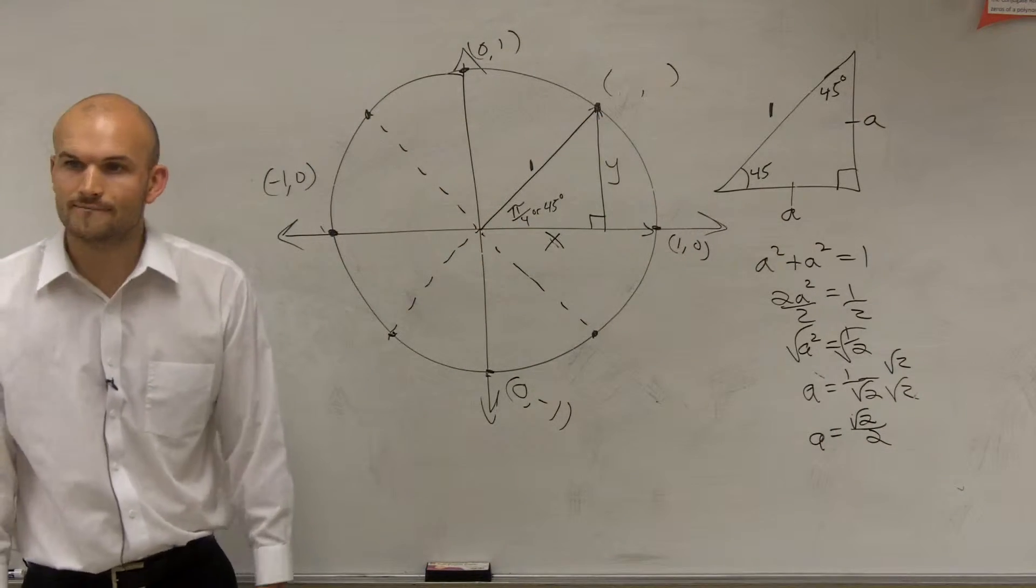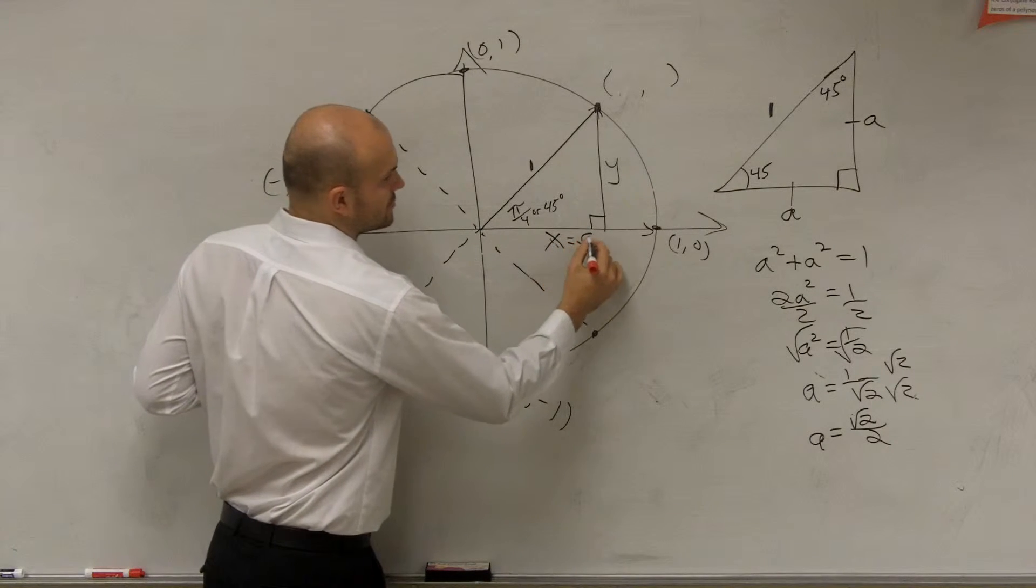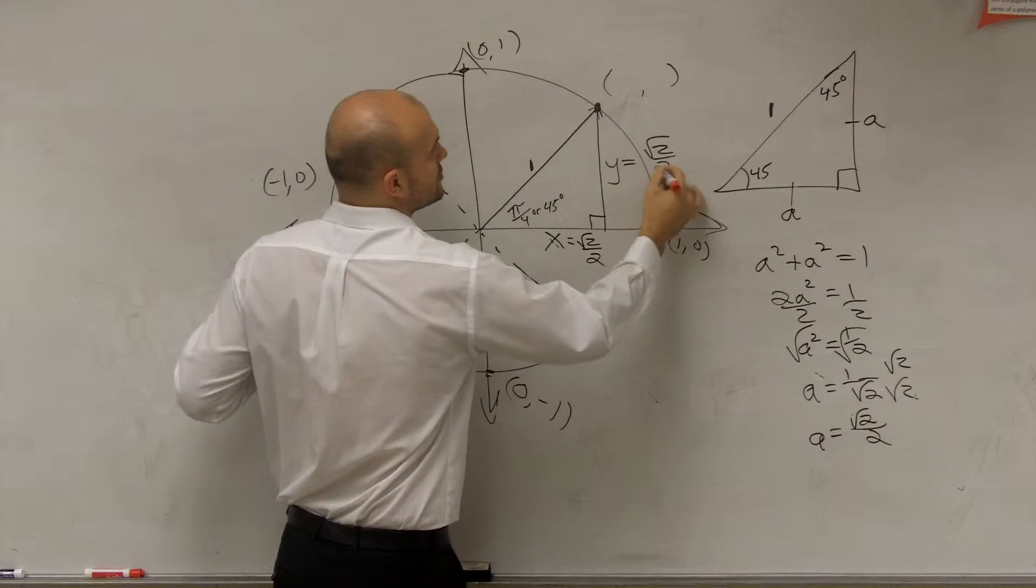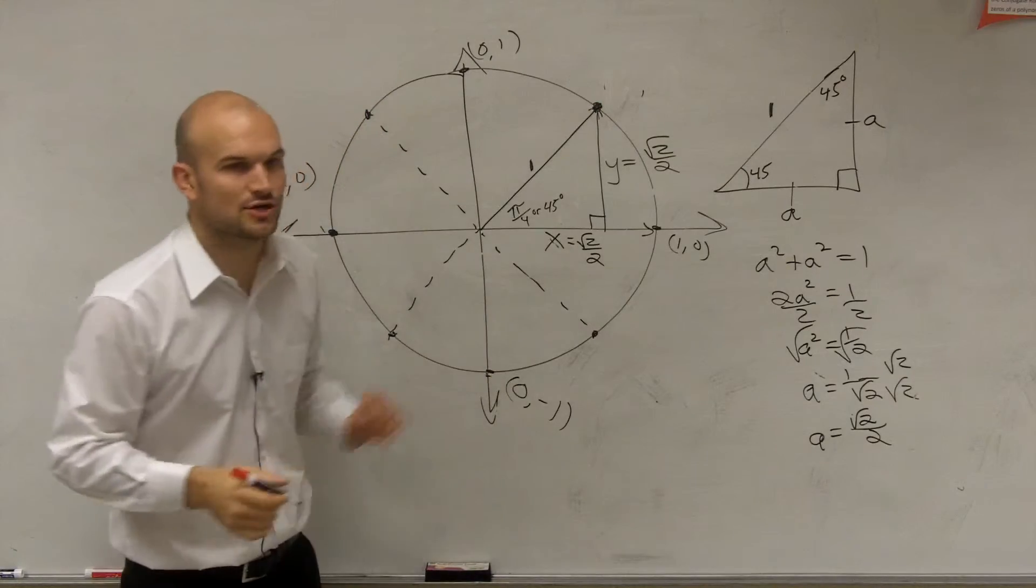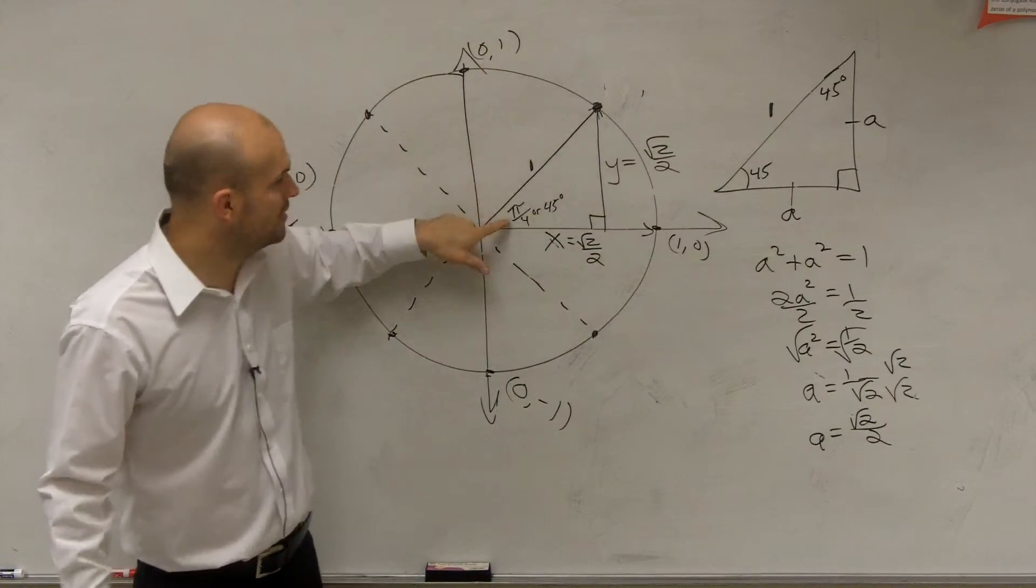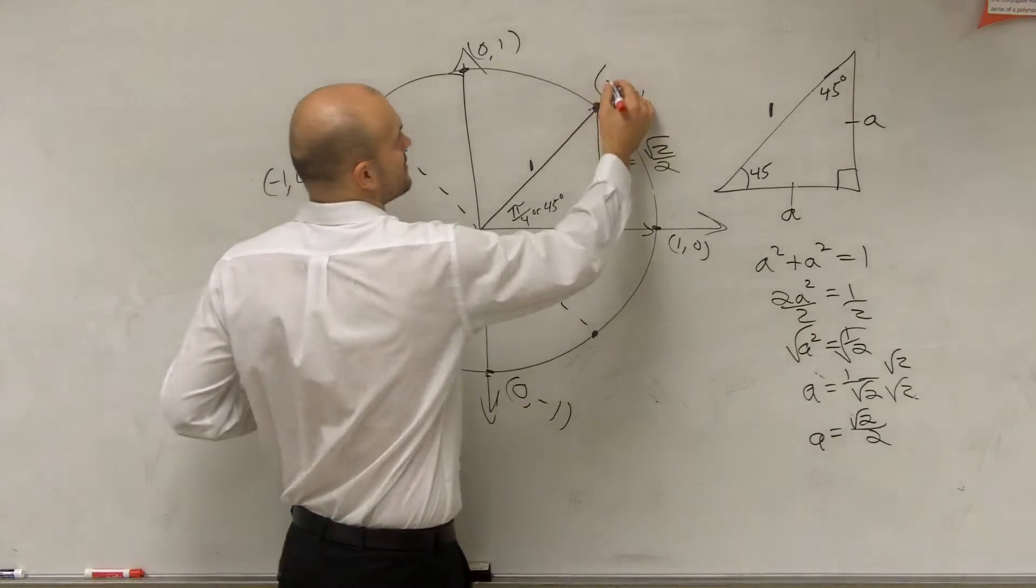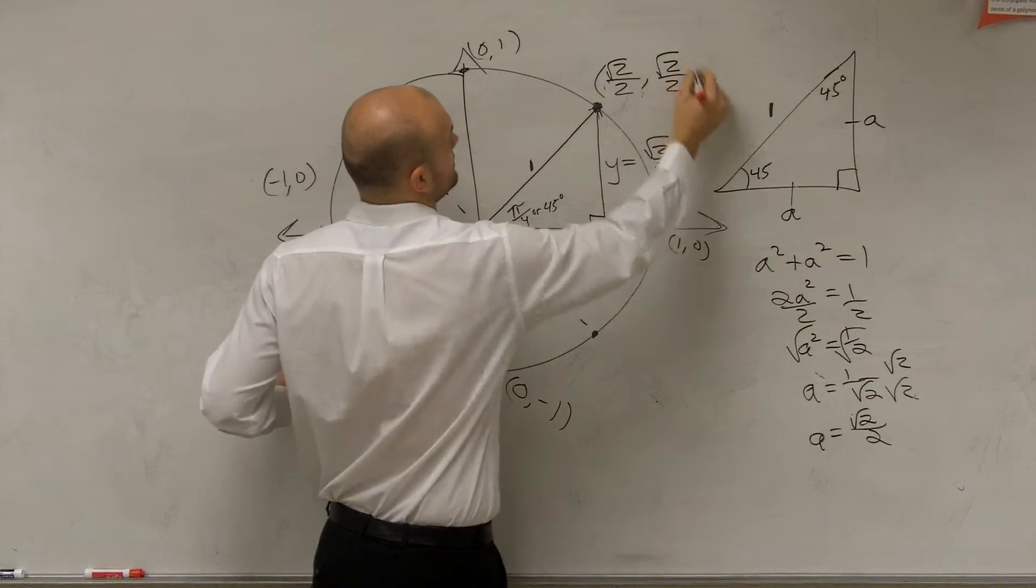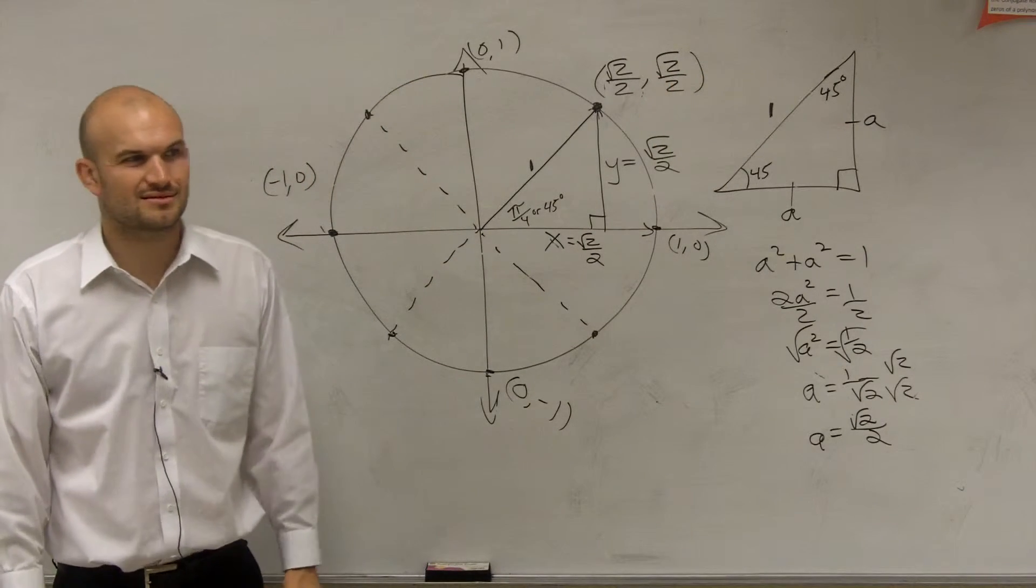So that means this distance of x is equal to the square root of 2 over 2, and this distance of y is equal to the square root of 2 over 2. So, ladies and gentlemen, this point on the unit circle, when you create an angle of pi over 4, or 45 degrees, is square root of 2 over 2, comma square root of 2 over 2. That kind of makes some little sense, a little bit.